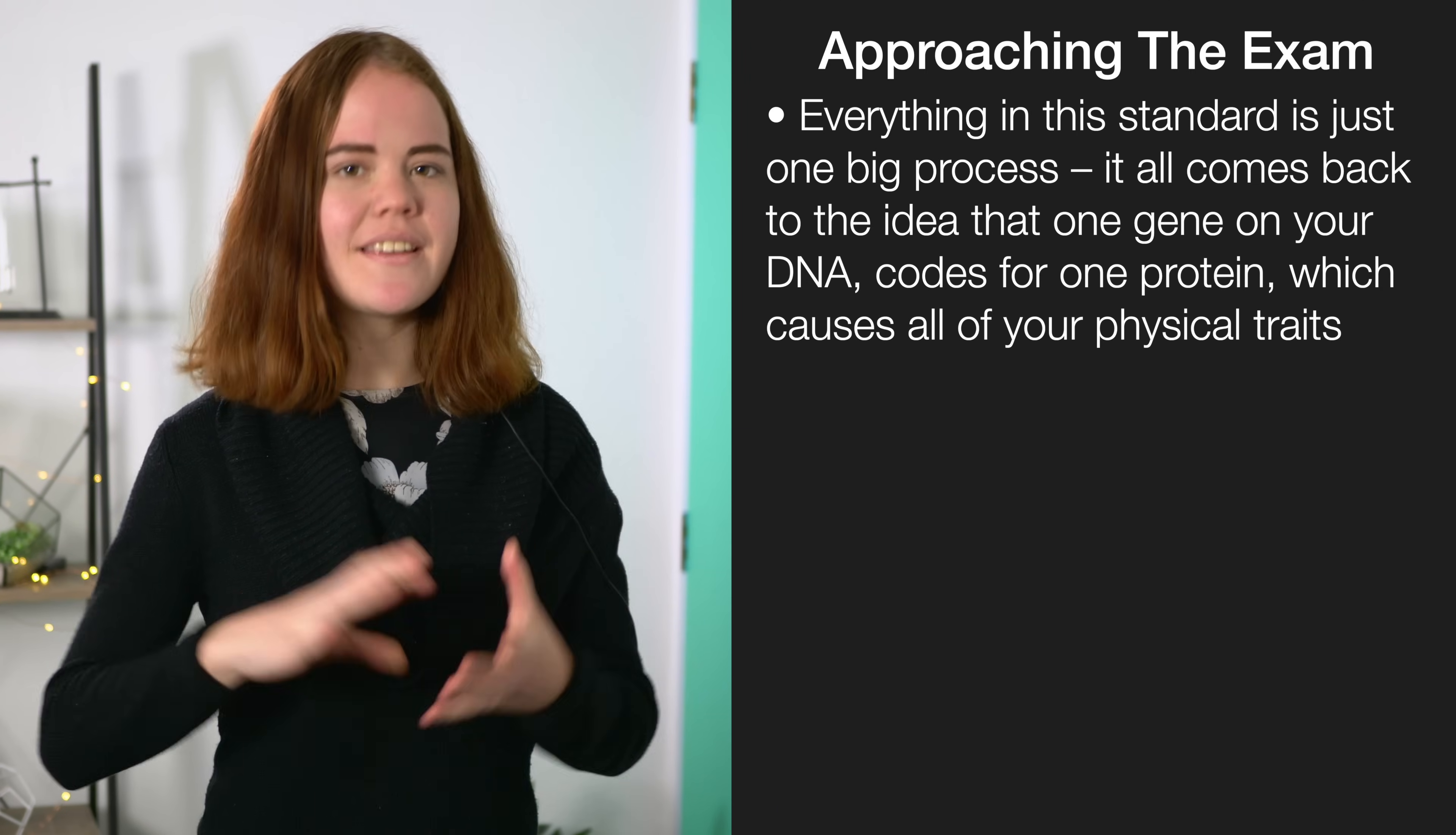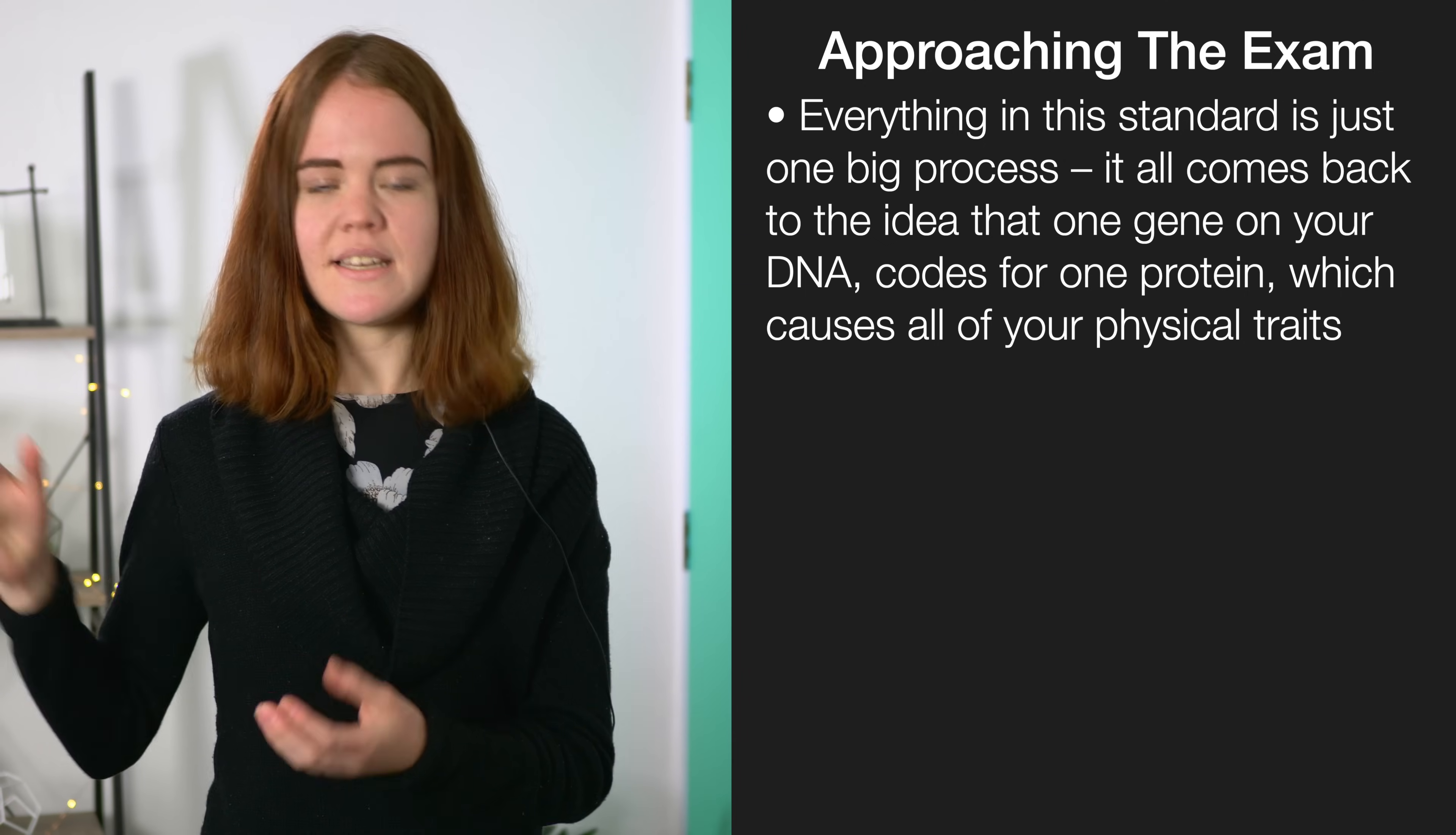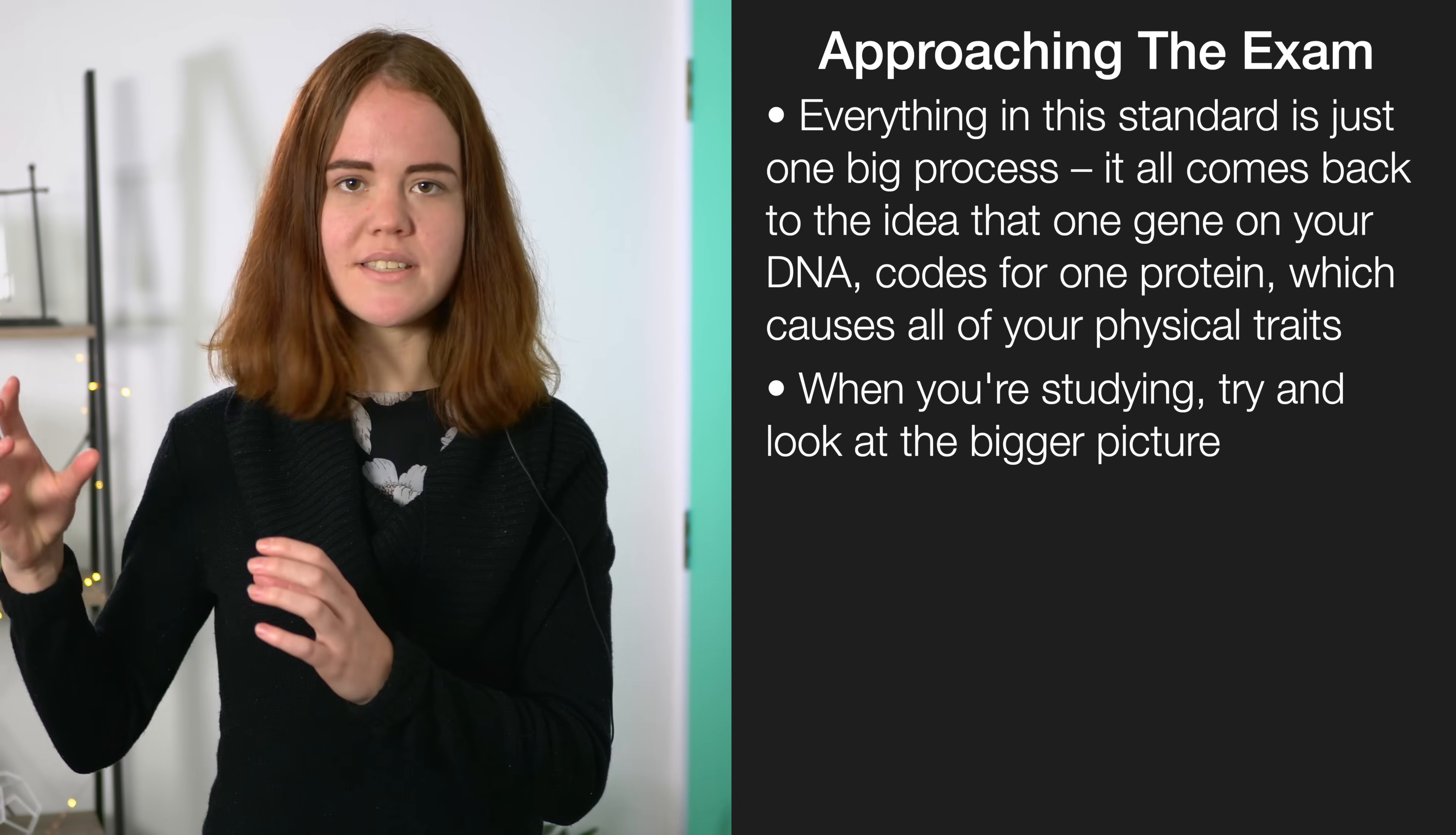Probably the most common but also the most inefficient study method that we see students using for this paper is to try to learn every single thing individually like it's separate information. The key here is that this paper is really about one big process. Everything comes back to the idea that one gene on your DNA codes for one protein which causes all your physical traits, and if that gene changes that protein changes.